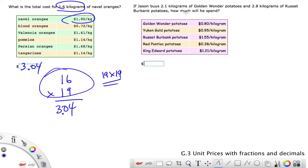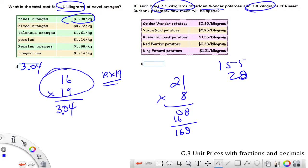And this last one, they've thrown two things at you. We want 2.1 kilos of the Golden Wonder and 2.8 kilos of the Russet Burbank, which means we just have to multiply them and add. We have 2.1 times the Golden Wonder, which is 8. So 8 times 1 is 8, 8 times 2 is 16, which is 168. 2 kilos at just under $1 per kilo means we're going to have about $2 worth of Golden, so this has to be 168. That's our estimation skills.